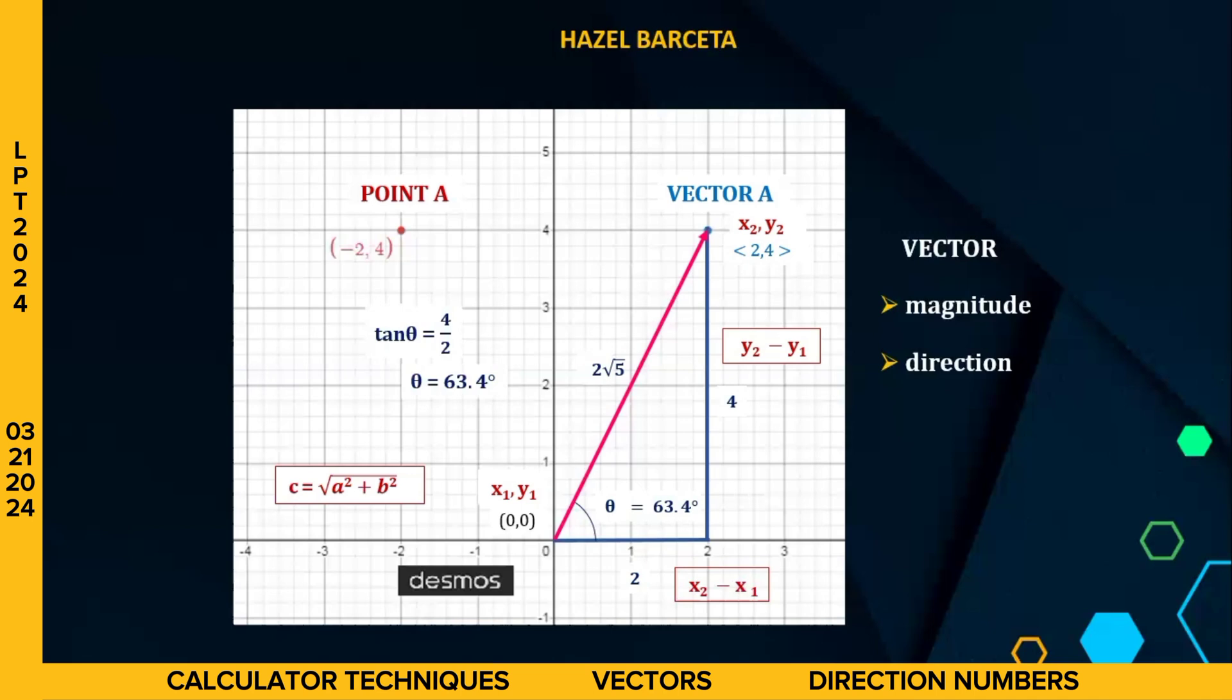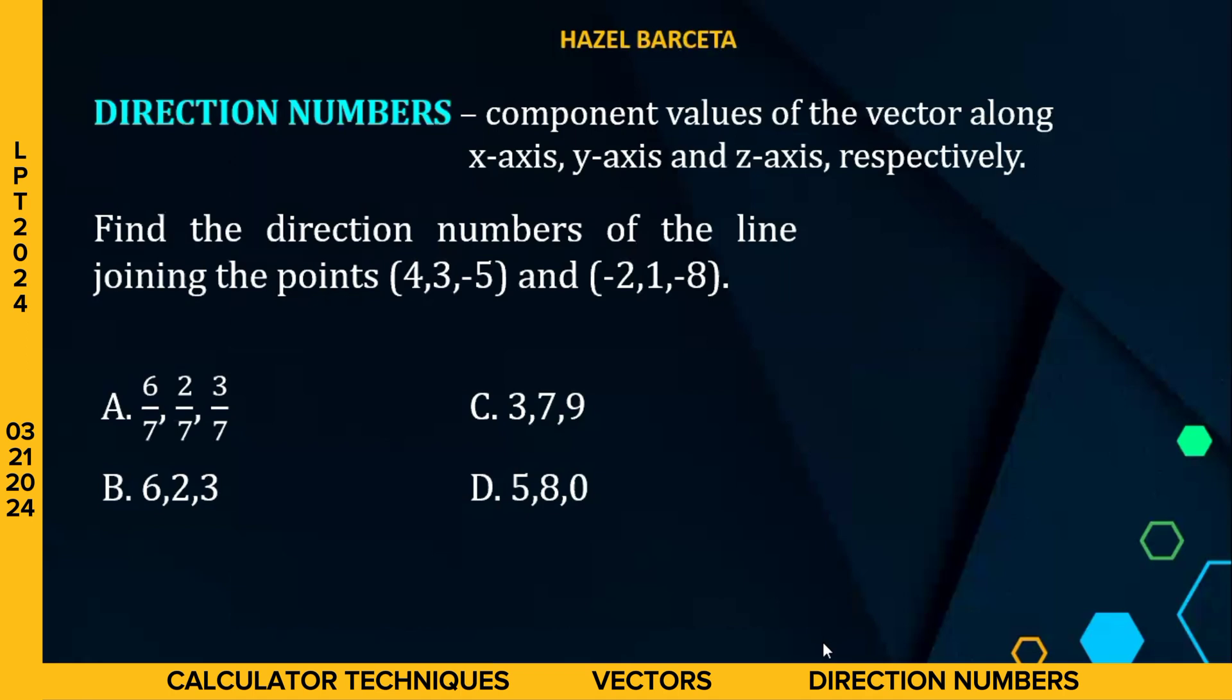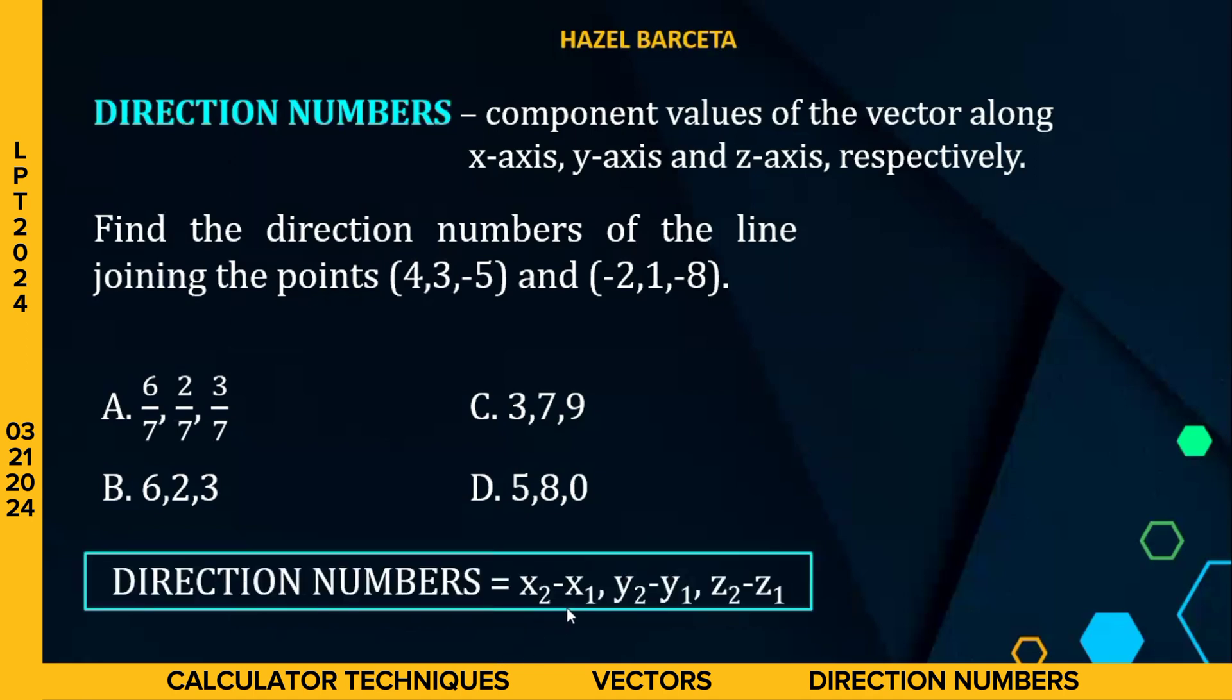Going back to the problem, the direction numbers. So ibig sabihin yung x component, y component, and z component, right? But since we only have 2 axes, so what we have is 2, 4 for our direction numbers of vector A. So ganyan lang po ang concept ng ating magnitude and direction of vectors. And please don't forget, kapag point, fix, kapag vector, hindi po, kasi hanggang doon pa po siya having this direction angle. Okay po. So going back to the problem, our direction numbers is equal to x sub 2 minus x sub 1, y sub 2 minus y sub 1, z2 minus z1.